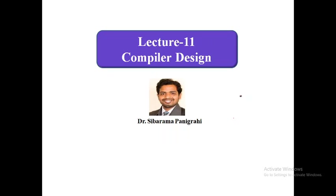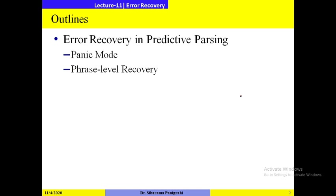Welcome to lecture number 11 of compiler design. In lectures 9 and 10 we covered top-down predictive parsing. One important factor in any compiler is how efficiently it handles errors and shows error messages. There are basically four types of error recovery techniques. In top-down predictive parsing we will discuss two: panic mode error recovery and phrase-level error recovery.